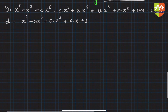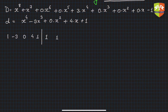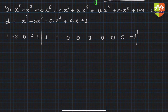Now, instead of writing all those powers of x again and again, we detach the coefficients. Write the divisor's coefficients on the left: 1, −3, 0, 4, 1. Then write the dividend's coefficients: 1, 1, 0, 0, 3, 0, 0, 0, −1. We have just detached the coefficients and written them in a line.